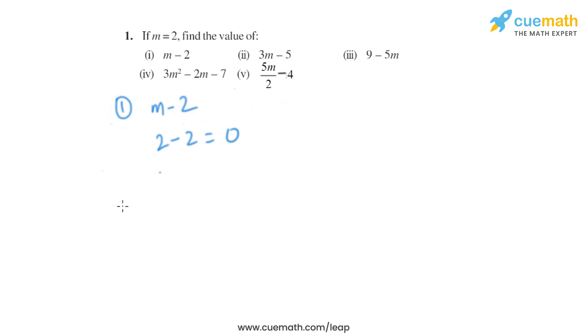So if we put the value of m equals to 2, that will be 2 minus 2, which is 0.